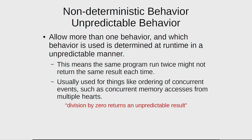Then there is non-deterministic behavior — the idea that you could do the same thing over and over and get different results each time. This is actually very useful, but not for something like division by zero. When you have a memory model, you usually need something like that because you can have a race between two processors, and there's no way to make a deterministic spec without making a very inefficient processor.